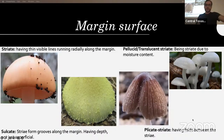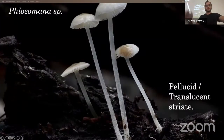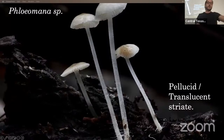Plicate-striate means having folds between the striae — one big fold and then one small one in between each one, which is more common in Psathyrella-adjacent species like Coprinus, Psathyrella, Coprinopsis, and Coprinellus. Here's a Coprinellus section Disseminati — these guys have striations going almost to the center and a slight depression. And here's a Flammulina species which is translucent striate — once dry, that's no longer visible and you just have a color change from margin to disc.